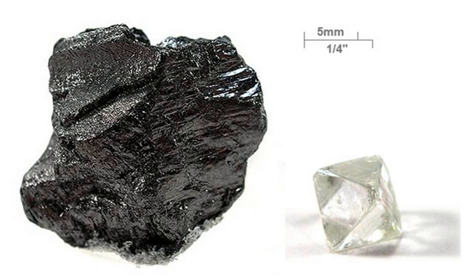Carbon's covalent radii are normally taken as 77.2 pm, 66.7 pm and 60.3 pm, although these may vary depending on coordination number and what the carbon is bonded to. In general, covalent radius decreases with lower coordination number and higher bond order. Carbon compounds form the basis of all known life on Earth, and the carbon-nitrogen cycle provides some of the energy produced by the Sun and other stars. Although it forms an extraordinary variety of compounds, most forms of carbon are comparatively unreactive under normal conditions.